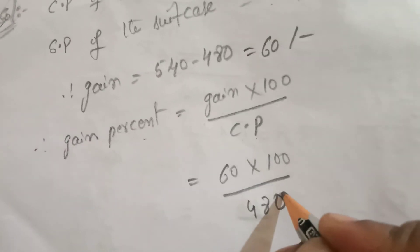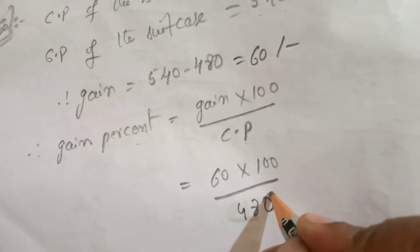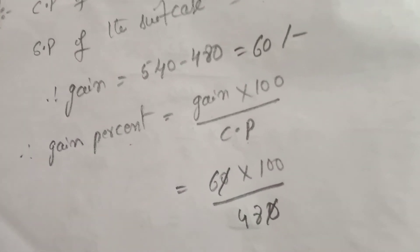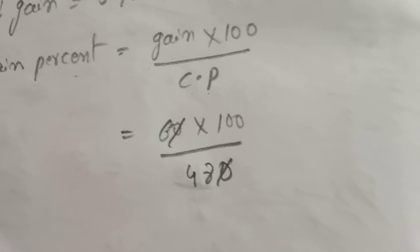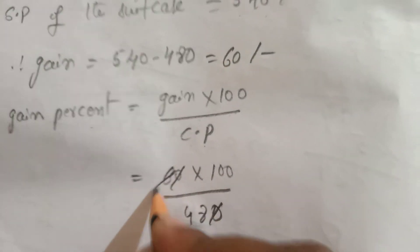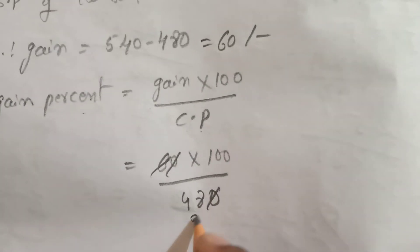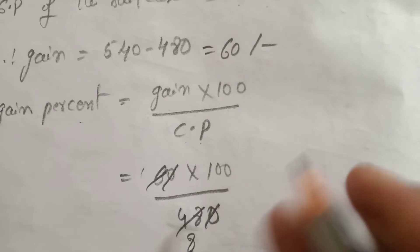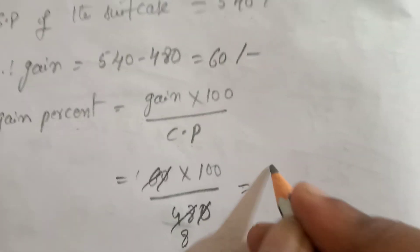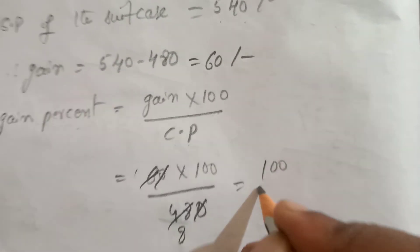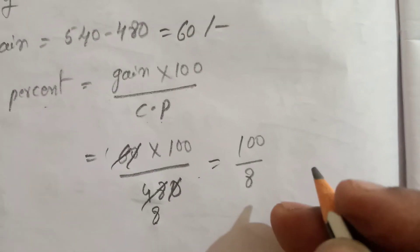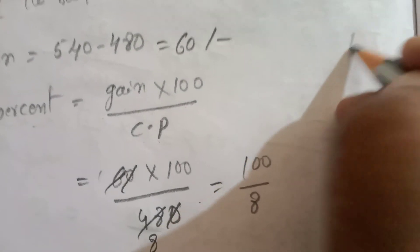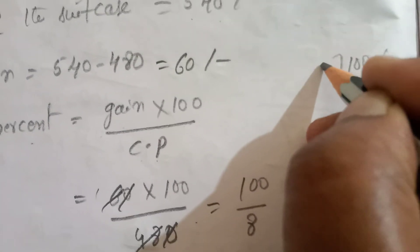Now cancel the zeros. 6 and 48 simplify: 6 into 1, and 6 into 8, giving 100 by 8. Then divide 100 by 8.